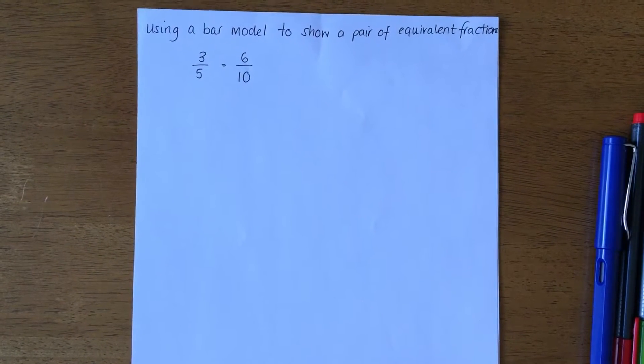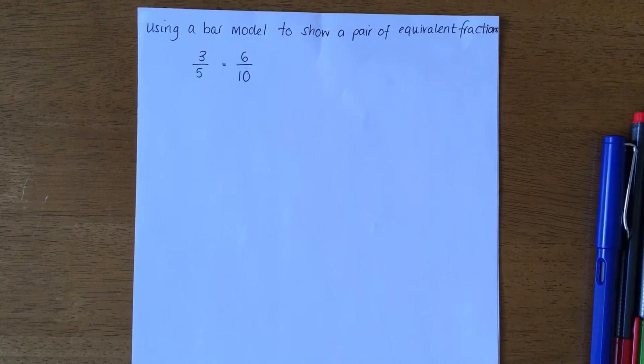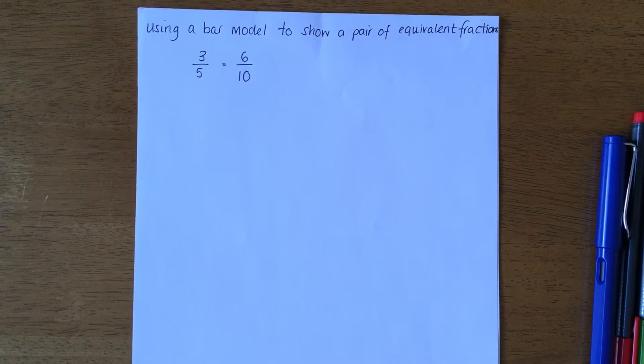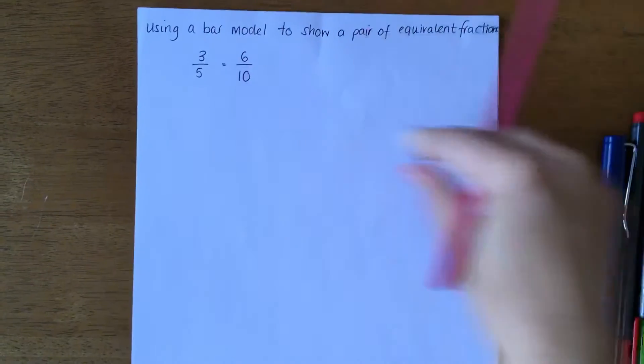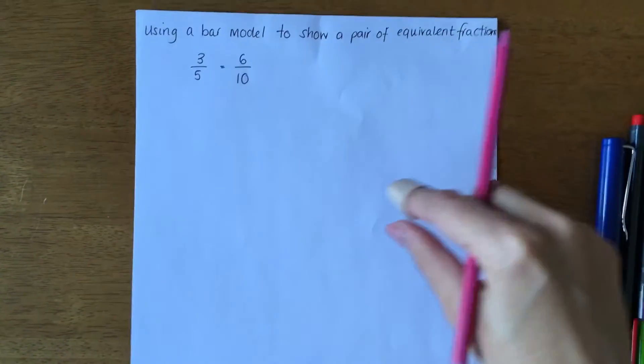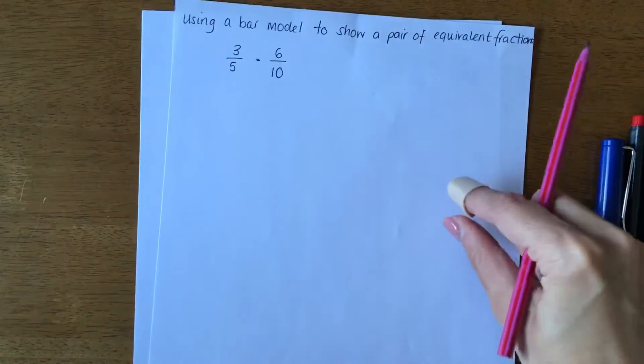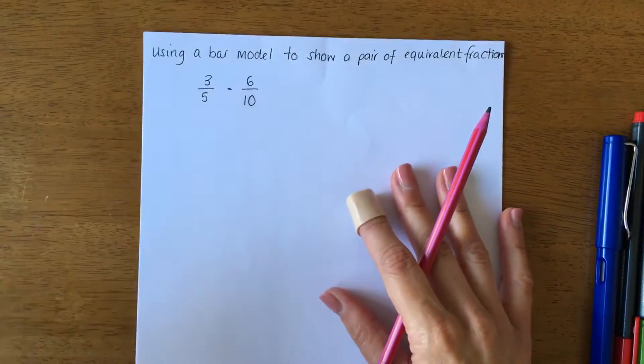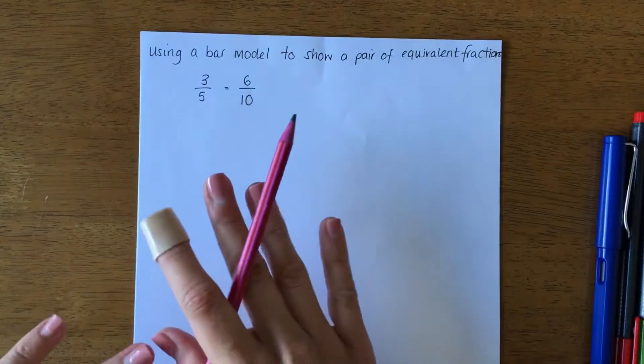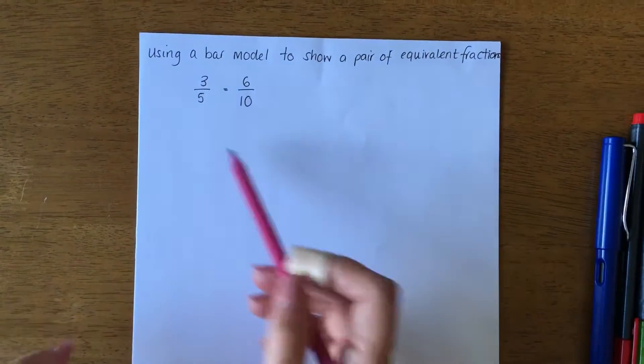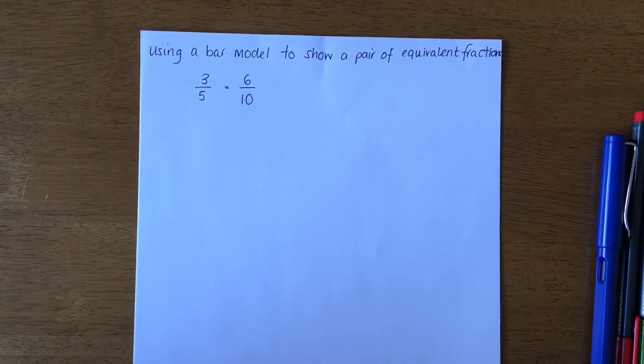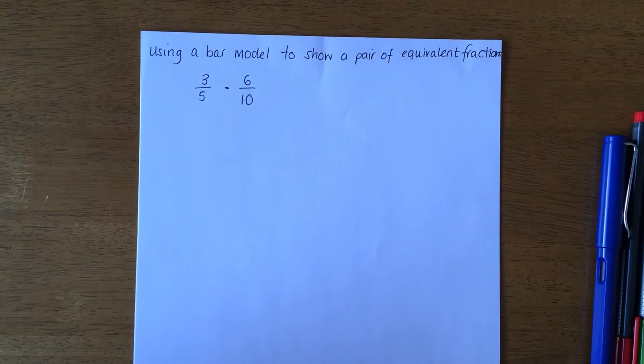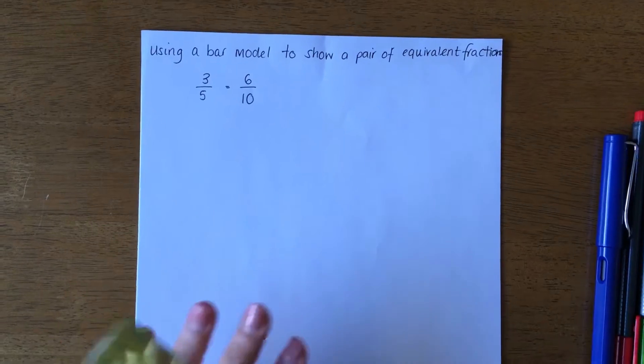This is like the bars on a fraction grid where you can see a whole, then two halves, then three thirds, and so on. But what we're going to do is just look at how we could represent these two. The key part is to remember that your bars should be equal in length.